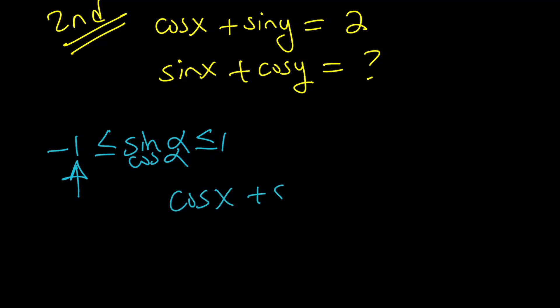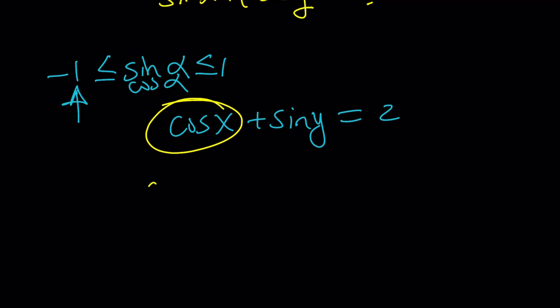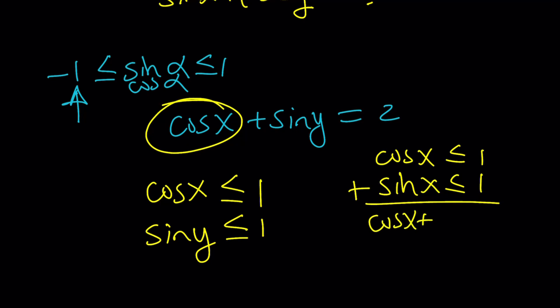So here's what I'm going to do. I'm going to take this expression cosine x plus sine y equals 2. And then I'm going to look at each of these functions. So we know that cosine x needs to be less than or equal to 1. That's the upper bound. And sine of y also needs to be less than or equal to 1. Now if you had the same angle, could we safely say that cosine x is less than or equal to 1, sine x is less than or equal to 1, then does that mean cosine x plus sine x is less than or equal to 2?